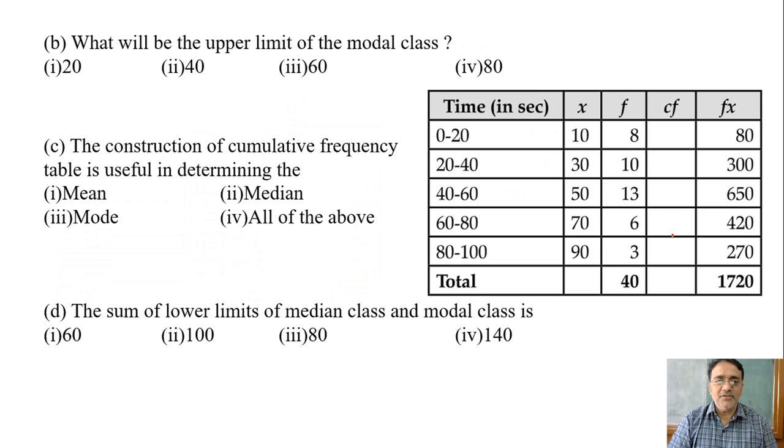Now the second question: what will be the upper limit of the modal class? So we need to find modal class first. Which frequency is the highest one here? 13. And 13 belongs to which class? 40 to 60. That means modal class is 40 to 60. So what is the upper limit here? 60. So correct answer is third option.